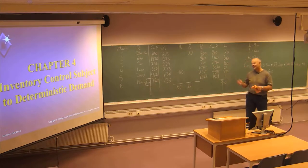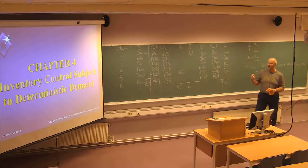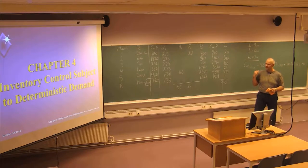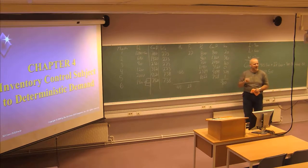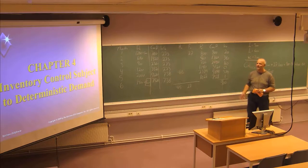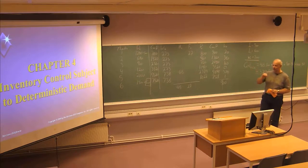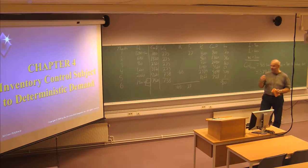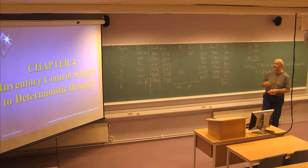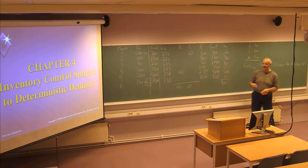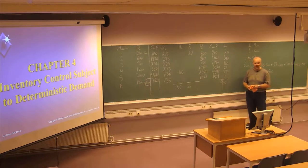The other type of inventory control models is when you have so-called stochastic or uncertain demand — when you don't know the exact demand, and you need to make some other models. This will be described later in chapter number 5.